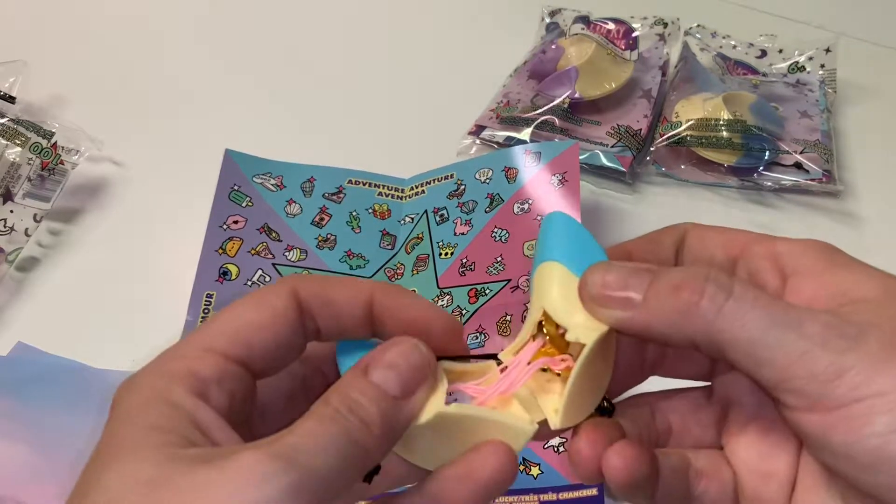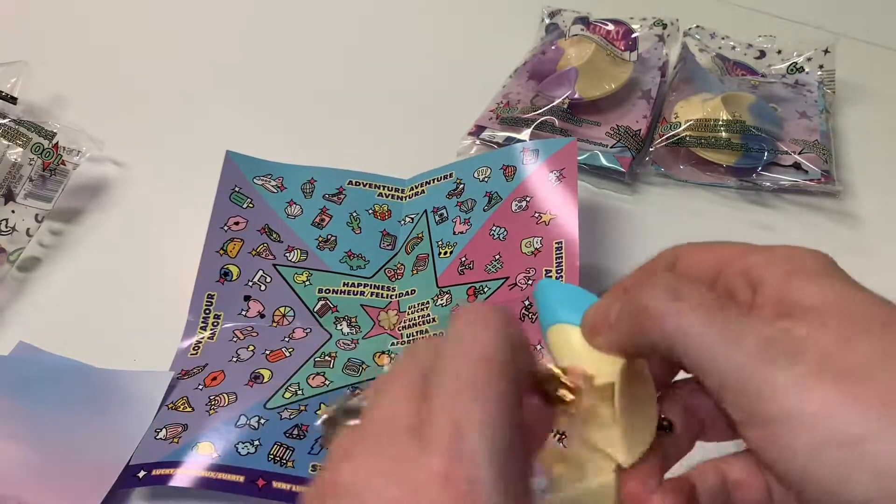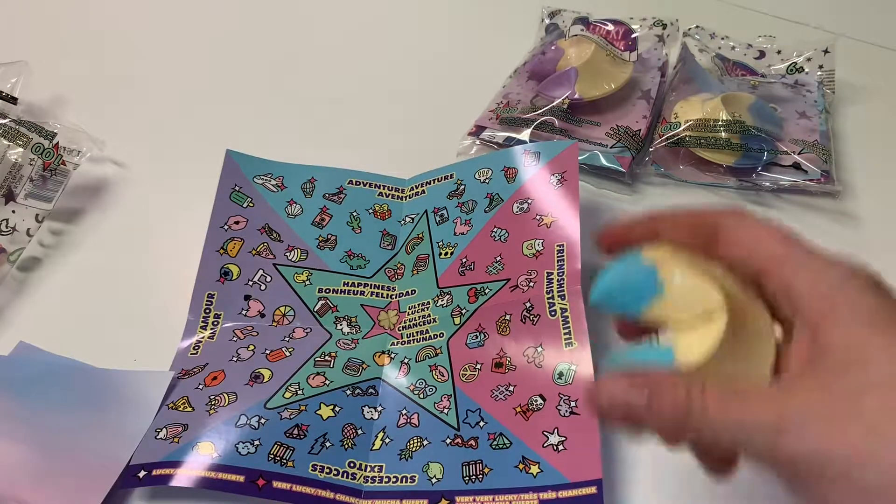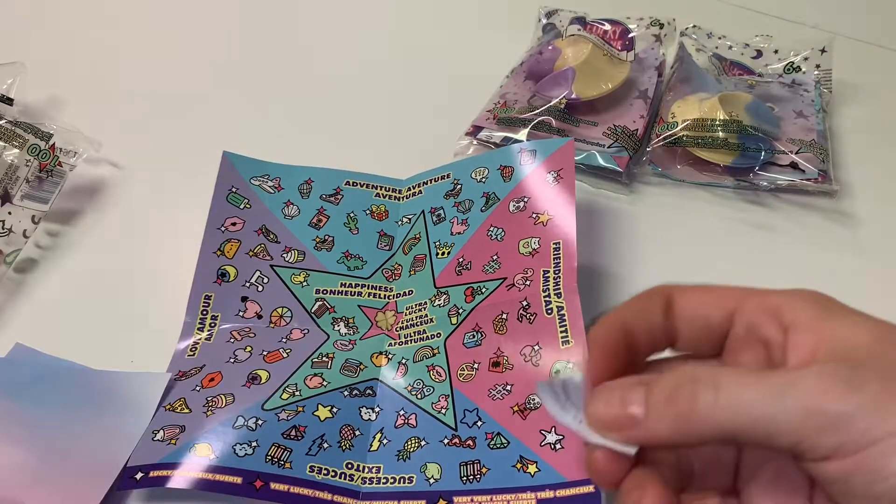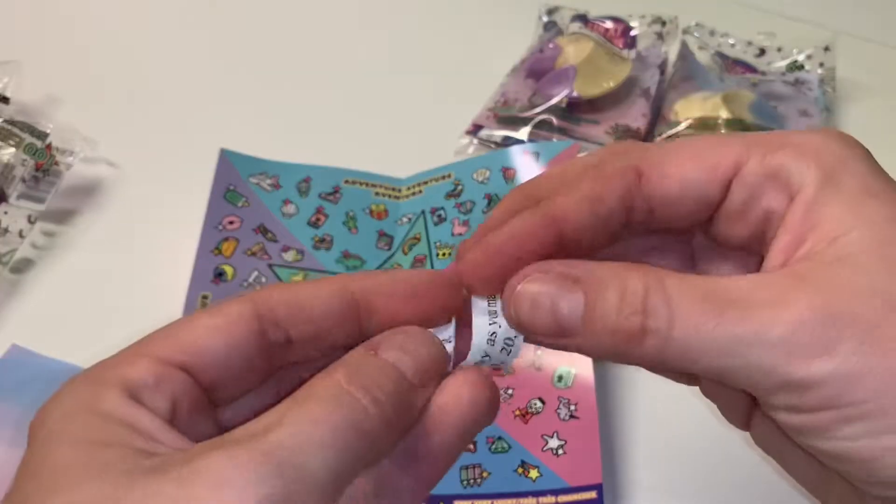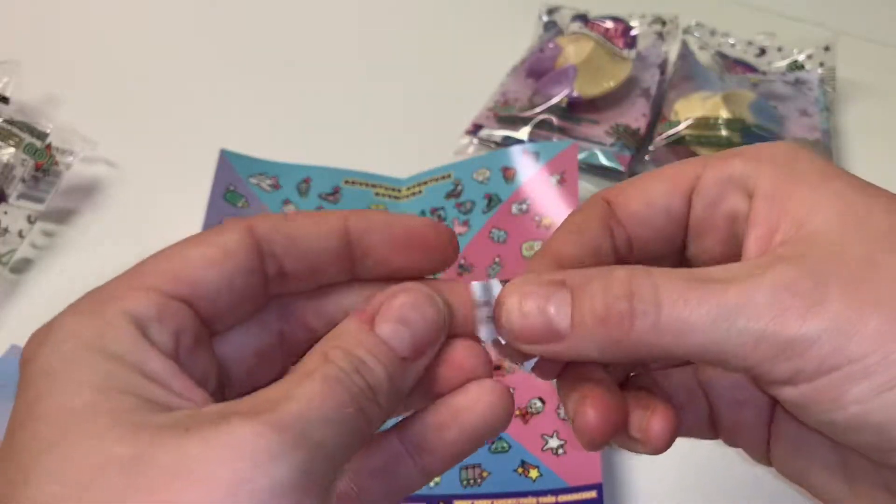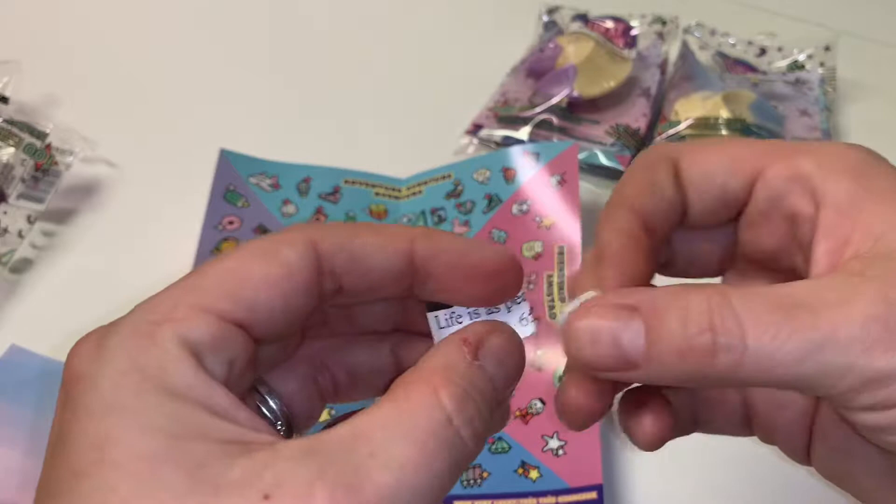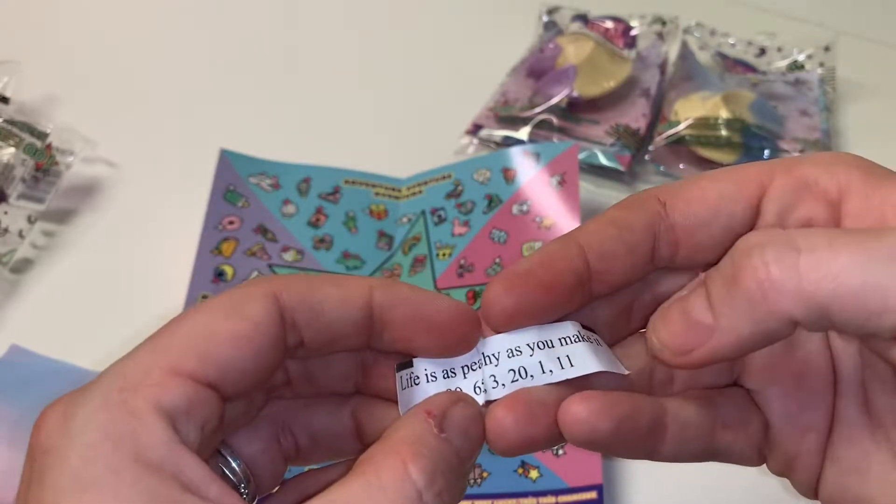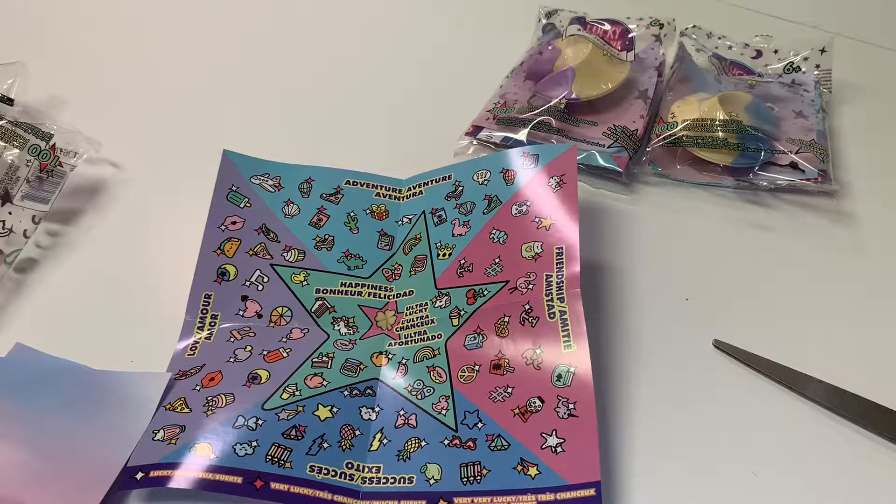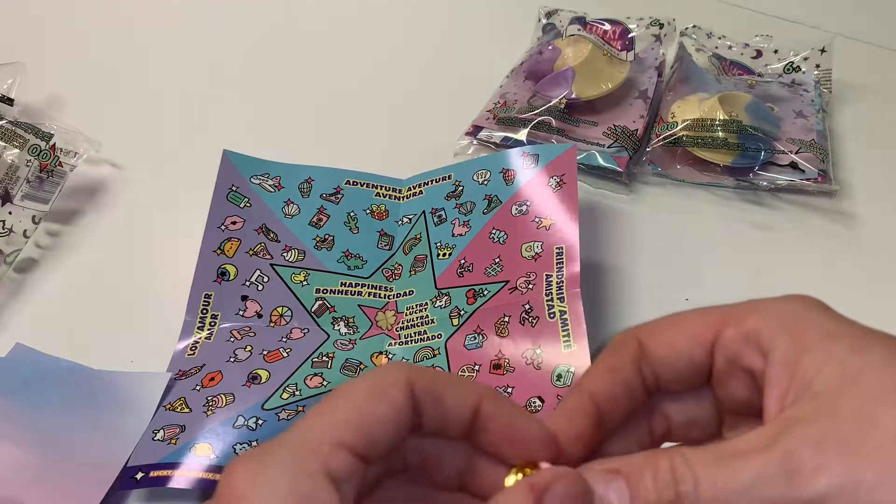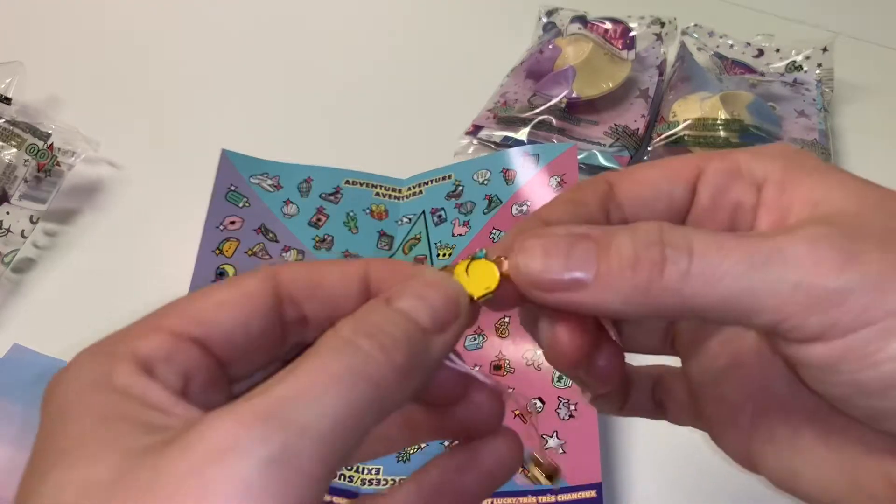All right. And you see there's a pink bracelet in here with this one. So I'm going to pull this out. Let's see what the... I just tore that fortune too. What is wrong with me? I'm going to have bad luck. It said life is as peachy as you make it. So what do y'all think it is? Comment down below. Life is as peachy as you make it. What is it going to be? It's a peach.